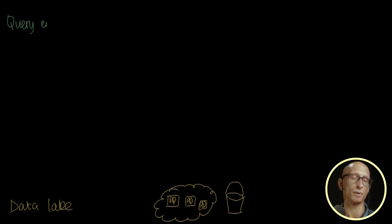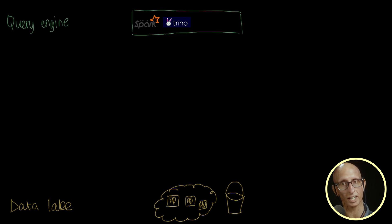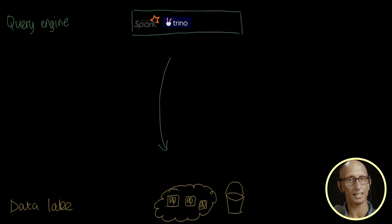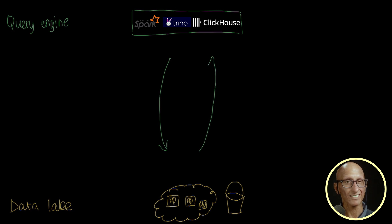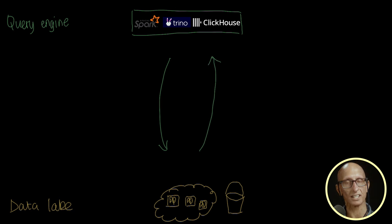For the purpose of this video, we'll assume that the data is being stored in Parquet files. We can query that data using a distributed query engine like Spark or Trino, or even a real-time analytics database like ClickHouse. And this works quite well to start with, but eventually we'll run into some challenges.